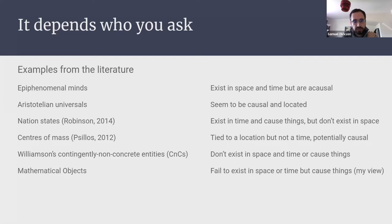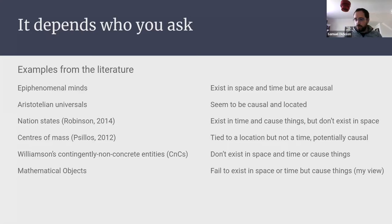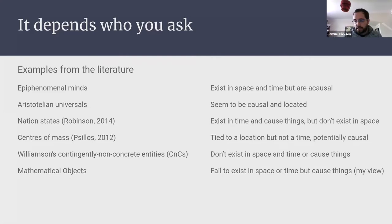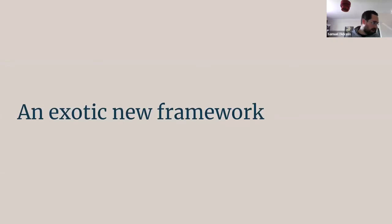I think mathematical objects fail to exist in space and time but can cause things to happen — we'll get to that. This just shows that things can fail to be concrete without being abstract, and we've kind of always accepted this in-between ground, which leads us to my idea.